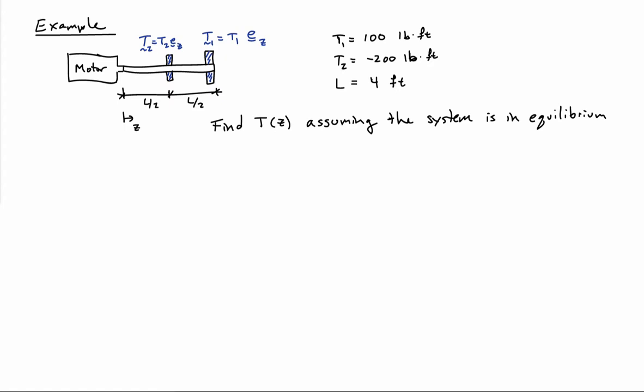Let's find T of Z, assuming the system is in equilibrium. So let's find the internal torque along the length of the bar, the internal torque at any section cut along the length of the bar.